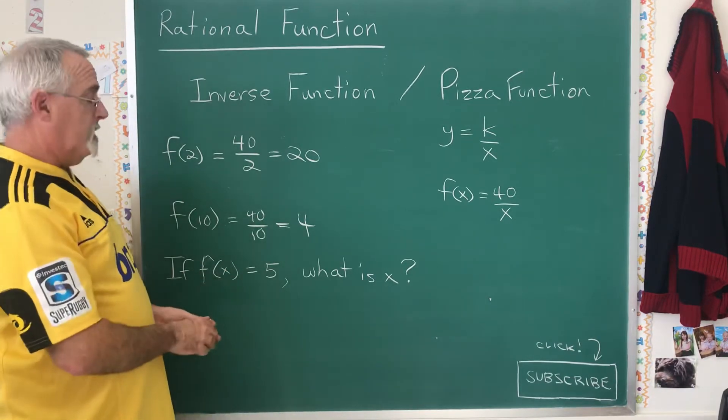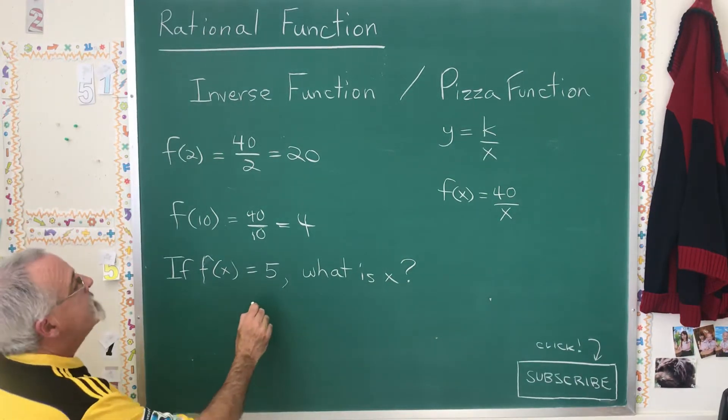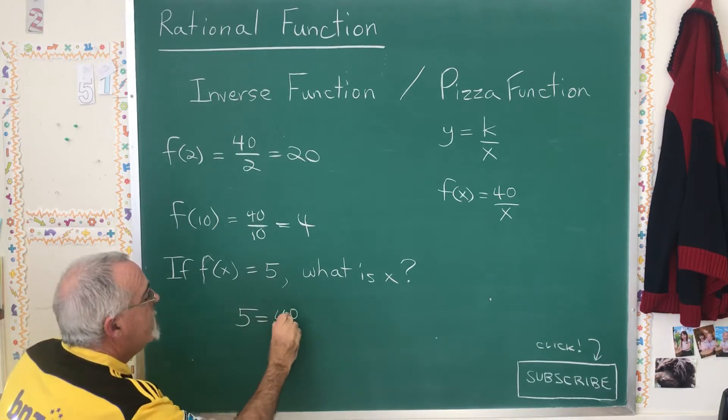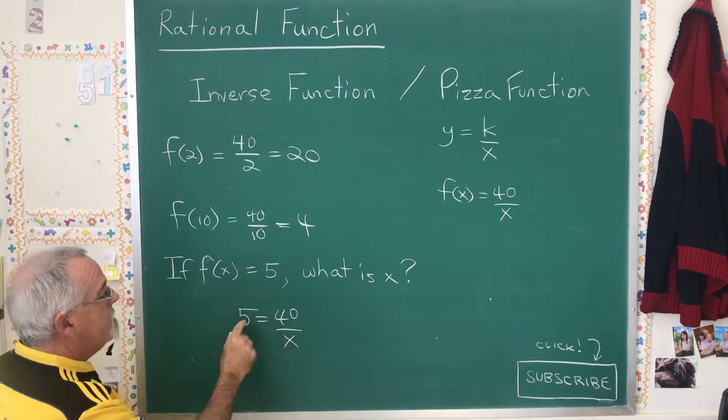It means y is equal to 5. And what that will look like is I will write 5 equals 40 over x. Instead of putting the 5 here, I'm putting it here.